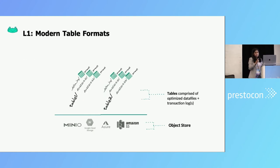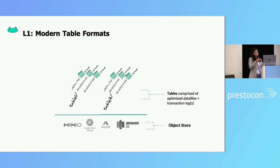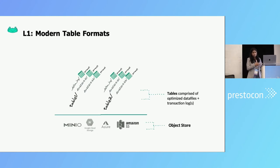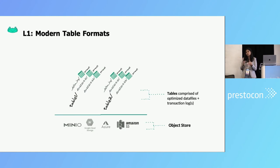The next level of optimization from the file level was table level, where we created table level abstractions on top of these files. Working with data, traditionally we've been used to treating data in terms of tables, thanks to databases. So now, creating these table level abstractions let us talk to the data in the object stores as if they are just tables, naturally making us talk to them in SQL, making it easy for data analysts and practitioners to access the data underneath.